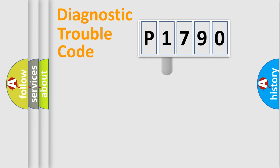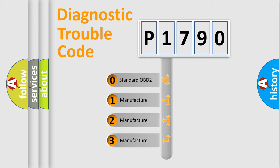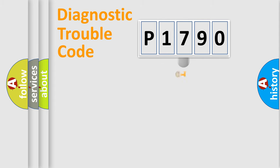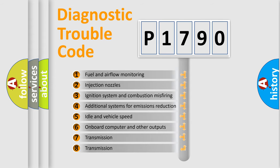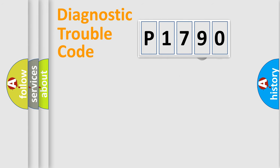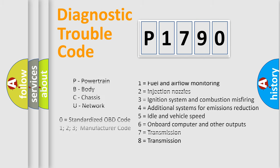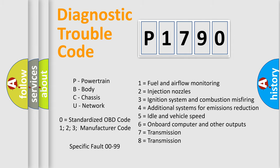This distribution is defined in the first character of the code. If the second character is expressed as zero, it is a standardized error. In the case of numbers 1, 2, or 3, it is a more specific expression of a car-specific error. The third character specifies a subset of errors, and this distribution is valid only for the standardized DTC code. Only the last two characters define the specific fault of the group.